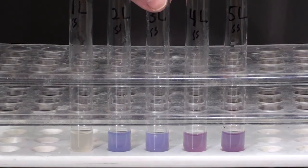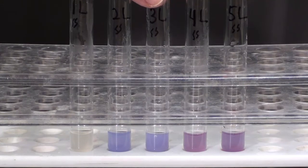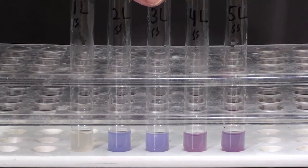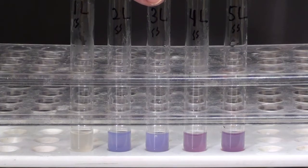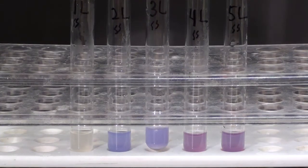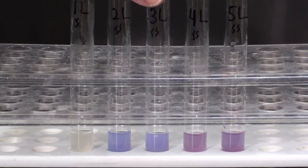Test tube 3 was boiled in an attempt to destroy the enzyme lipase. It was then placed with litmus cream and boiled lipase at body temperature for 30 minutes. A small amount of reaction occurred.